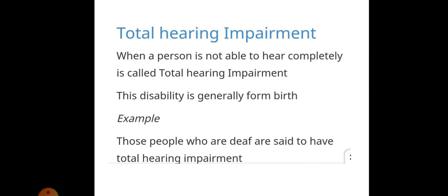Total hearing impairment: if a person is not able to hear completely, we say he is deaf — we call it total hearing impairment. This disability is generally from birth; the person is not able to hear from birth. Those people who are deaf are said to have total hearing impairment.